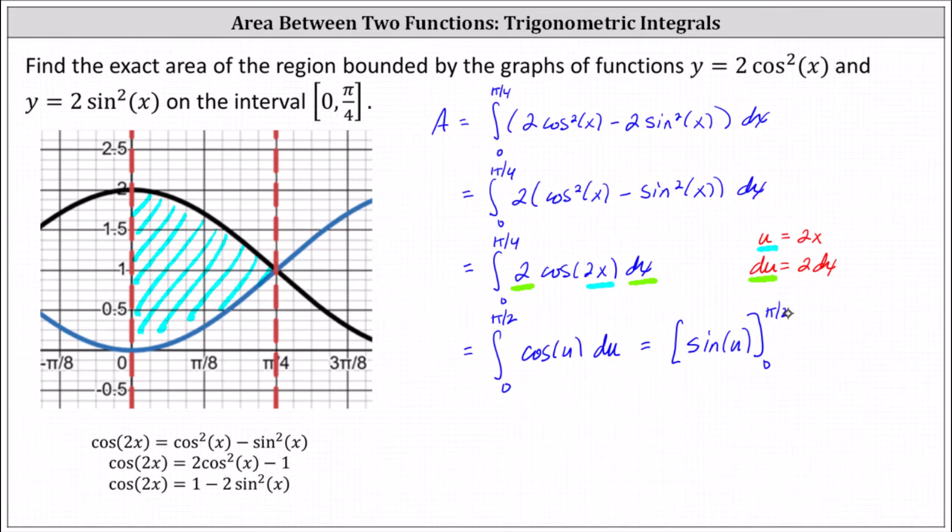Finally, we determine sin(π/2) - sin(0). Sin(π/2) equals 1 and sin(0) equals 0, which indicates the area is exactly one square unit.